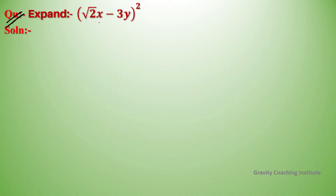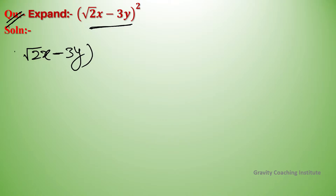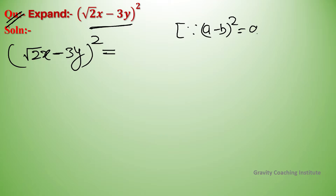Expand (√2x - 3y)². Is mein identity use karenge: a² - 2ab + b². Yahan a suppose karenge √2x aur b suppose karenge 3y.